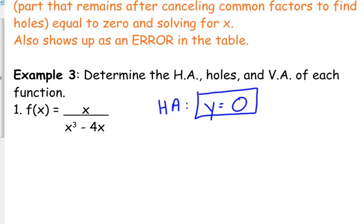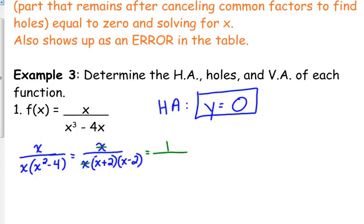Holes. We need to factor. Obviously, the numerator does not factor. The denominator does. First of all, it has a GCF of x and then we can take it a step further. It's the difference of perfect squares. So the x in the numerator and the denominator cancel. Our simplified version is one over x plus two times x minus two. That means that we have a hole.